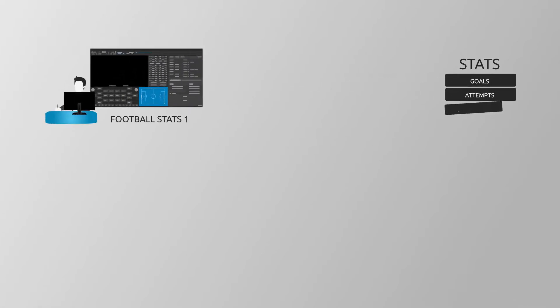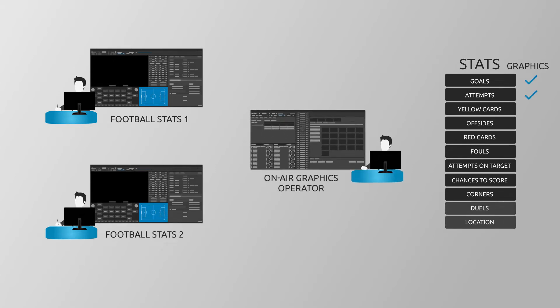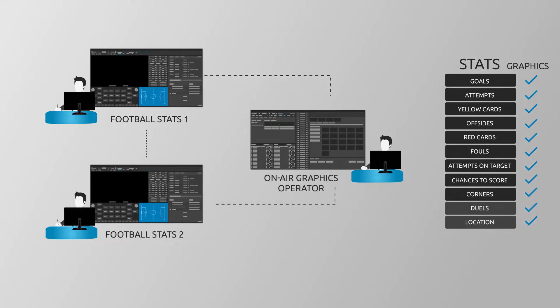FootballStats has different levels of detail you may choose from, where the most demanding levels require extra workstations that team up to gather this data. The system was designed to allow real-time communication between any number of data gathering workstations and the CG operations, ranging from a single box to several scouting engines and a separate CG.